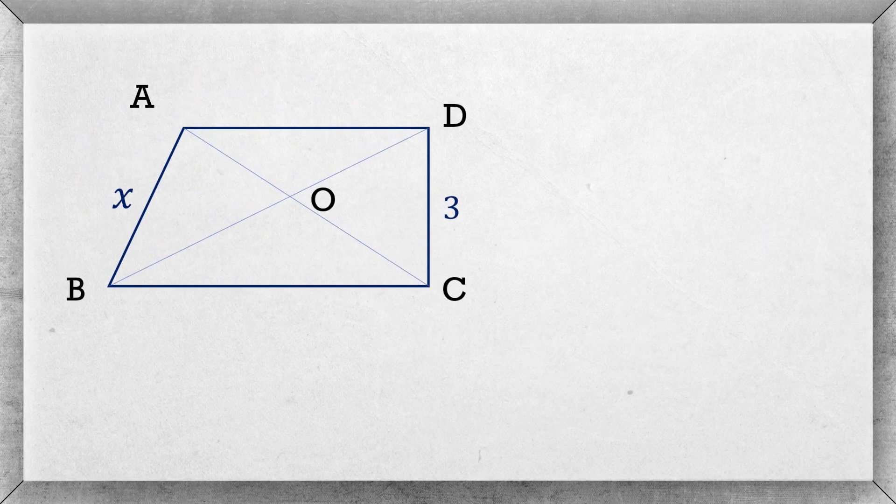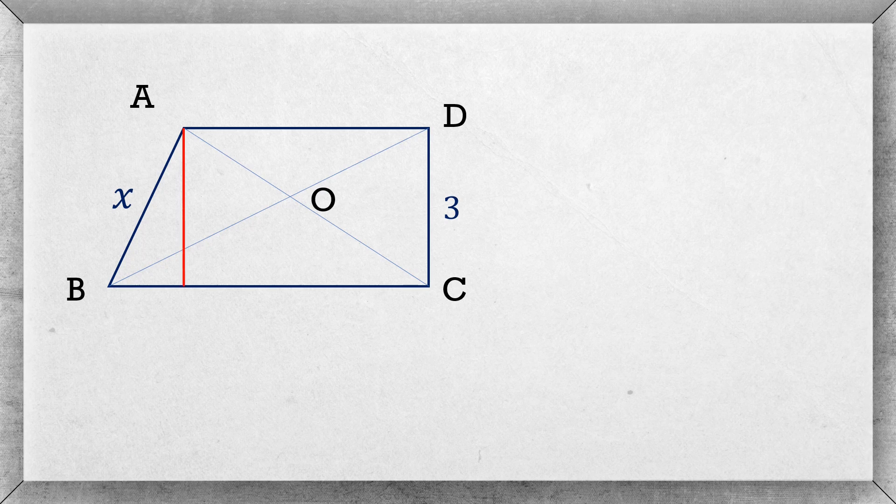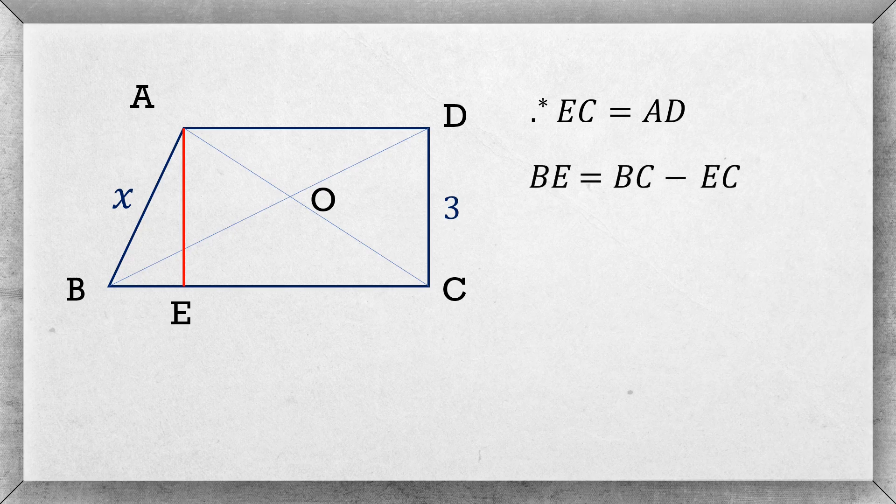Now draw a perpendicular to BC from vertex A and name the point E where it intersects BC. Here EC is same as AD. Now BE is equal to BC minus EC, and as EC equals AD, BE equals BC minus AD which is 4, as we previously calculated.